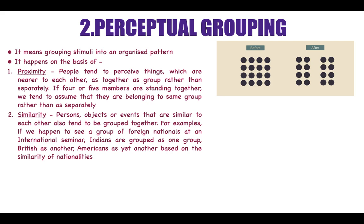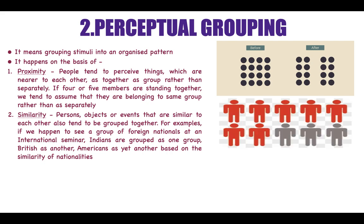For example, when you see a group of foreign nationals at an international seminar, you tend to group Indians as one group, British as another, Americans as another, and Japanese as another group. This is basically how you organize information so that too much information doesn't bog you down.